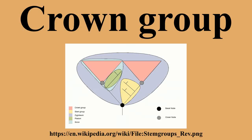Stem birds perhaps constitute the most cited example of a stem group, as the phylogeny of this group is fairly well known. The following cladogram, based on Benton, illustrates the concept. The crown group here is Neornithes — all modern bird lineages back to the last common ancestor. The closest living relatives of birds are crocodilians. Following the phylogenetic lineage leading to Neornithes, the line itself and all side branches belong to the stem birds until the lineage merges with that of the crocodilians. In addition to non-crown group primitive birds like Archaeopteryx, Hesperornis, and Confuciusornis, stem group birds include the dinosaurs and the pterosaurs.